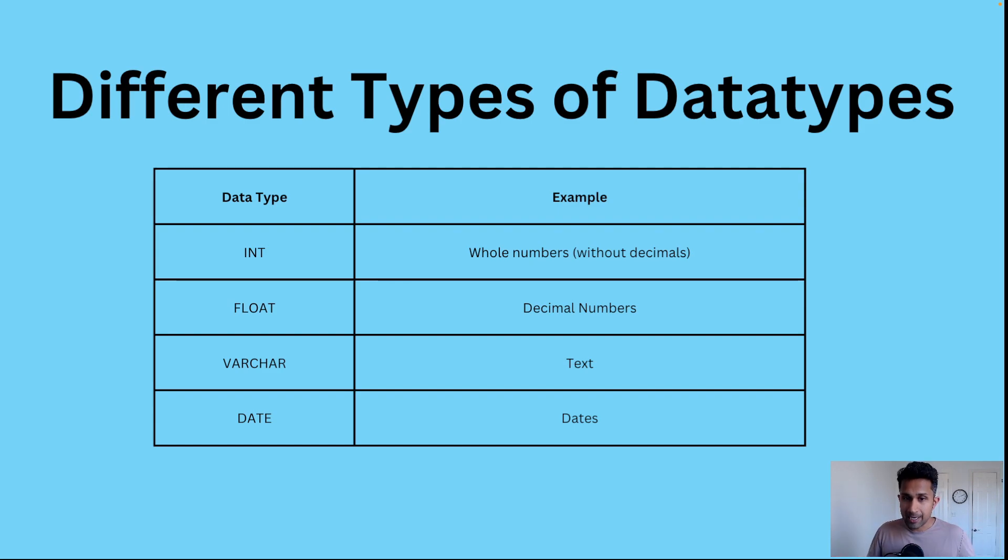The first type is INT, which is an integer - whole numbers without decimals like 10, 100, 200, 300. The second one is FLOAT, which includes decimals like 3.14 or 5.8 or 25.200.